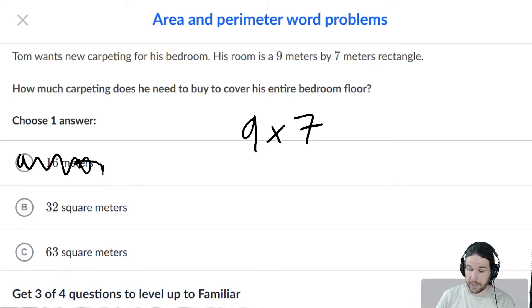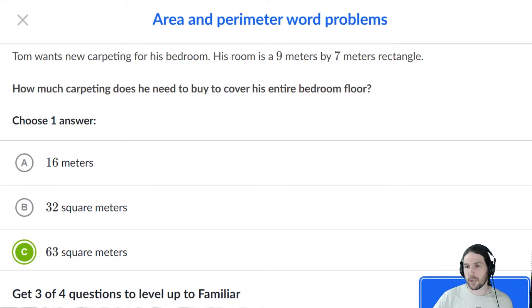9 times 7 is 63. So Tom is going to need 63 square meters of carpet for his bedroom.